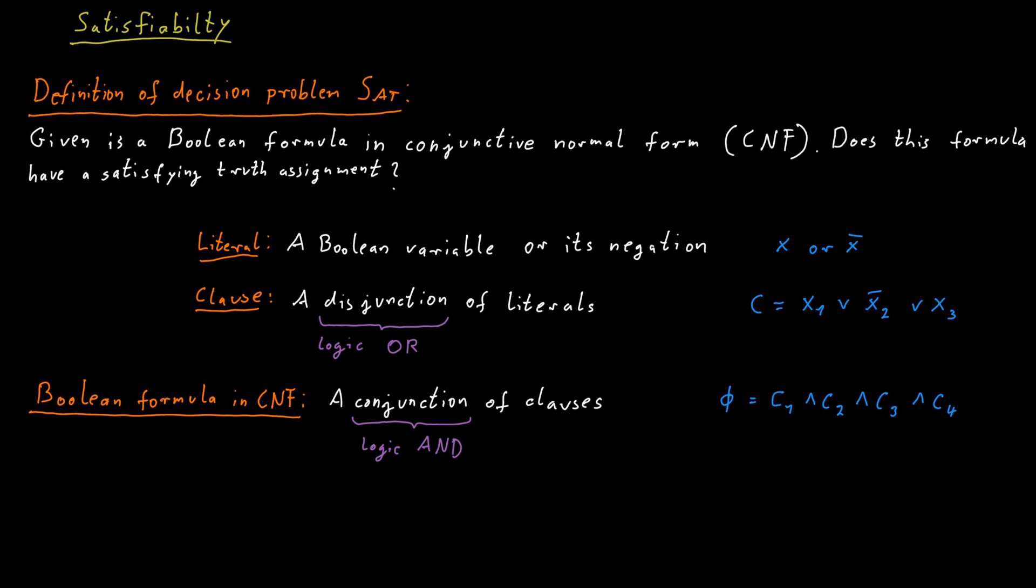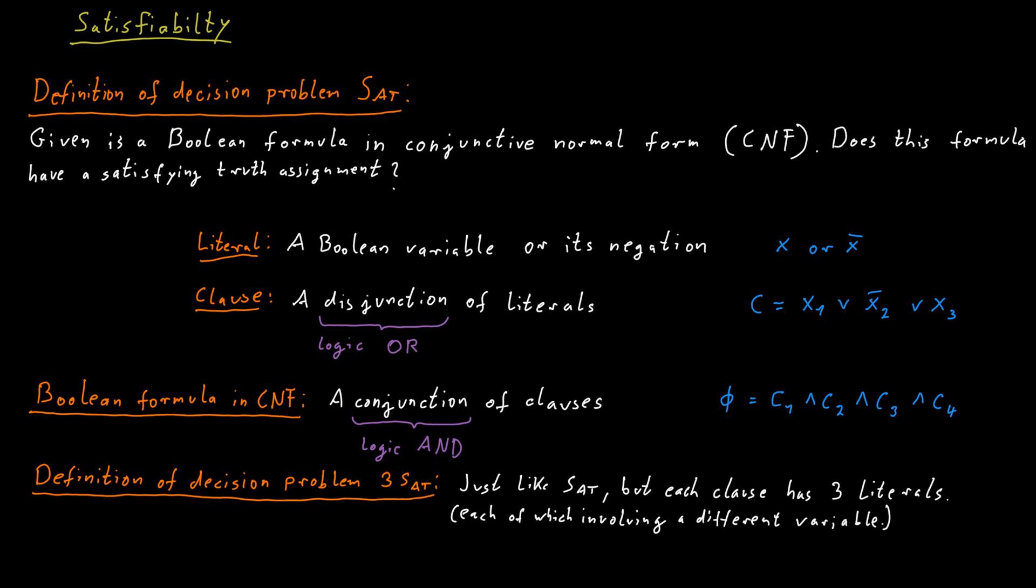A special case of satisfiability is the problem 3-SAT. 3-SAT is the same as satisfiability, but there's an additional restriction on the input, namely that each clause contains exactly three literals. So an example of a formula we might have for 3-SAT would be not x1 or x2 or x3.